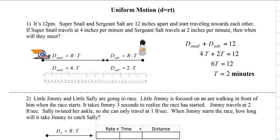Uniform motion problems, these are my favorite word problems. Alright, so let's start with a little story. It's 12 p.m. Super Snail and Sergeant Salt are 12 inches apart, and they start traveling towards each other. Super Snail travels at 4 inches per minute. Sergeant Salt travels at 2 inches per minute. So they're not very fast.